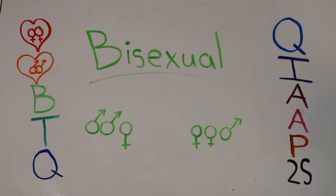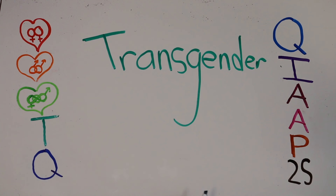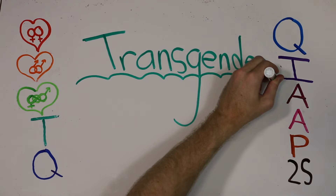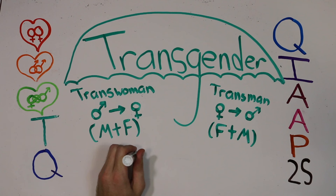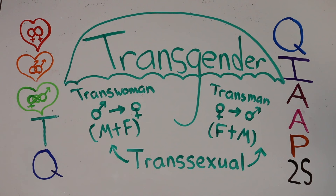The term transgender describes a person who identifies mentally and emotionally as a gender that does not match their biological gender. It also functions as an umbrella term for trans people, including trans women, trans men, and transsexual — a term describing people who alter themselves physically through surgery or hormone therapy to align their physical bodies with their gender identity.